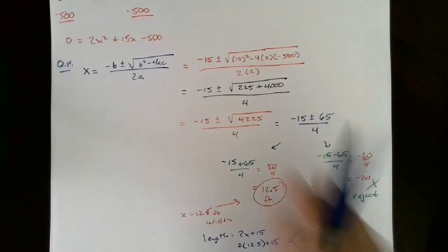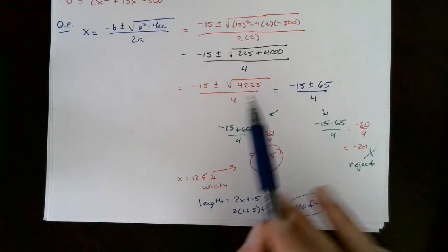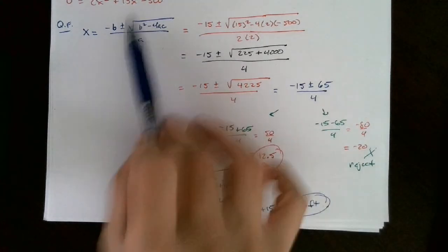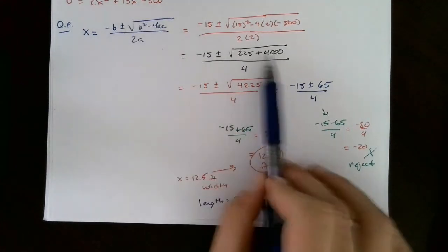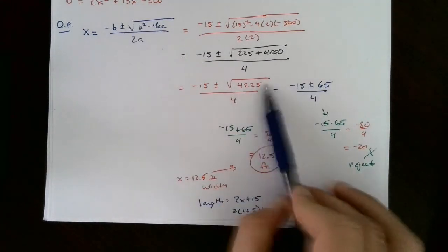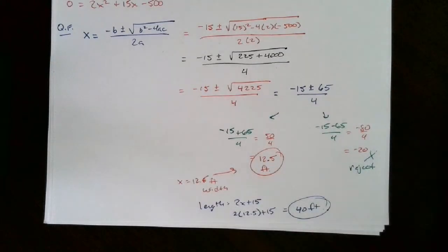The fact that the square root came out to a perfect square tells you this would have factored, and solving by factoring would have been fine. But it's okay to use the quadratic formula. Since it's an application problem, I evaluated the square root right away. If it were just a practice equation, you'd need to simplify that radical using your normal rules.